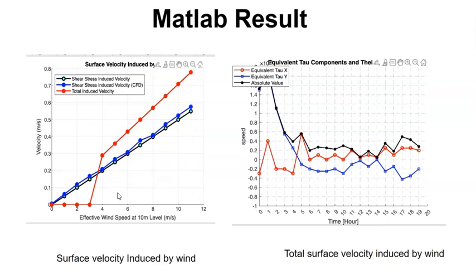The other graph, which we have, has two plots. On the left, the surface velocity induced by the wind. The lines increase in velocity as the wind speed increases and the total induced velocity is crucial. It illustrates the impact of higher wind speed on surface velocities.